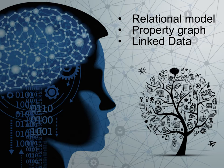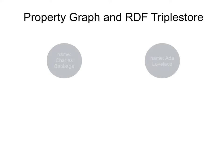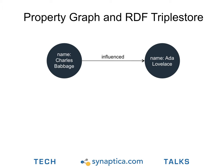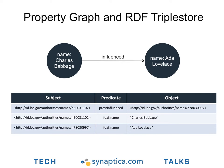A property graph database represents data exactly as their model with nodes or vertices and relationships or edges. As an example, if we wish to say that the famous mathematician Charles Babbage influenced the career of Ada Lovelace — whom we regard as the first ever computer programmer — in a property graph model it is a straightforward relationship connecting two nodes depicting each individual. The properties or string literals denoting their names are contained within each node, and the relationship between the two is named 'influenced'.